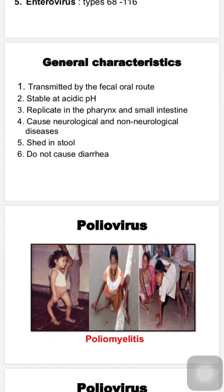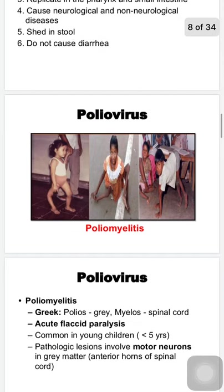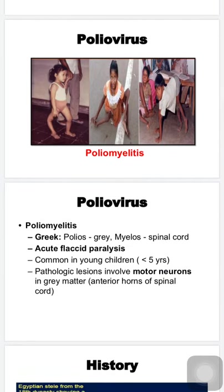In today's class let us start learning about poliovirus. Most of us know poliovirus causes acute flaccid paralysis, a condition known as poliomyelitis — an acute infectious disease mainly involving the central nervous system. The term poliomyelitis is from the Greek: 'polios' means gray matter, 'myelos' is the spinal cord, and 'itis' is inflammation of the motor neurons in the spinal cord.